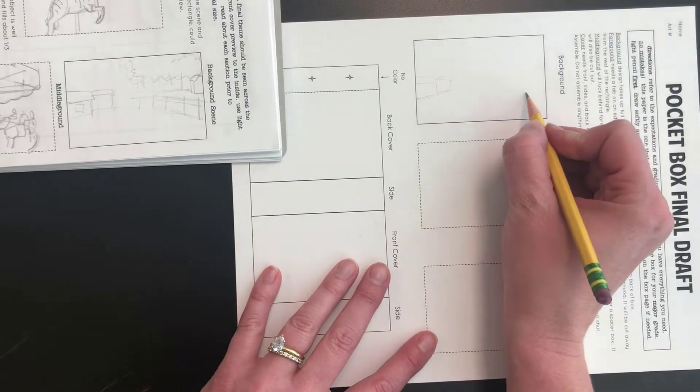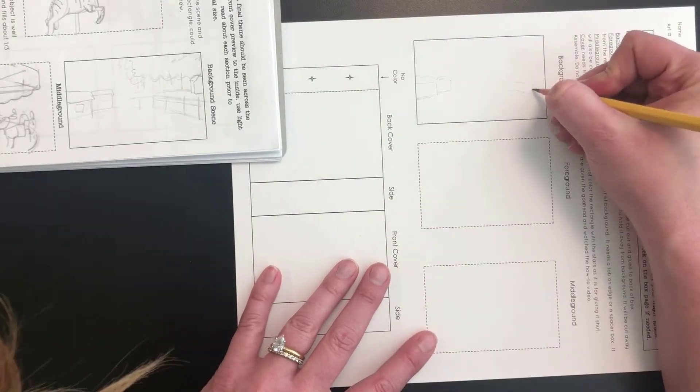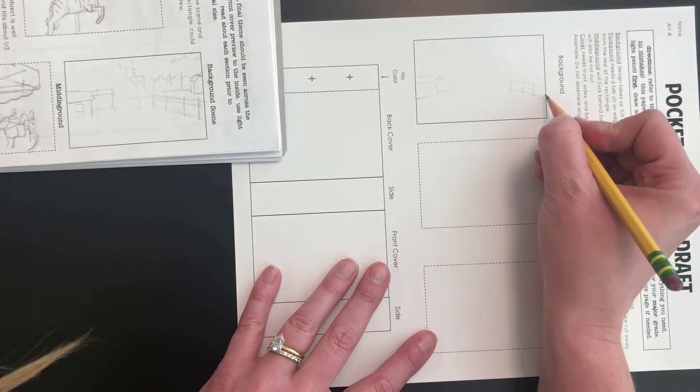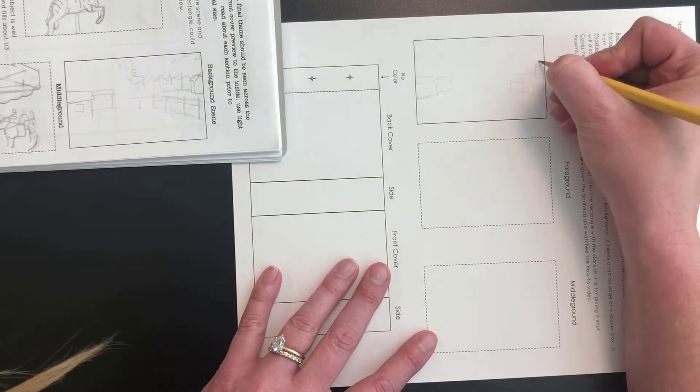For your final idea, you should see a theme across all the parts of the box, from the front cover, the back cover, the sides, and the entire layers of the inside.